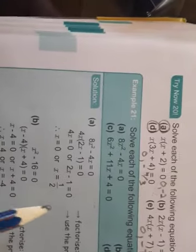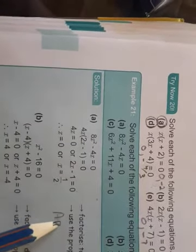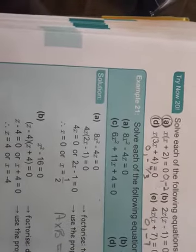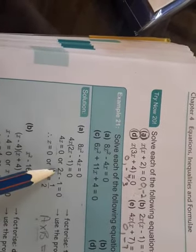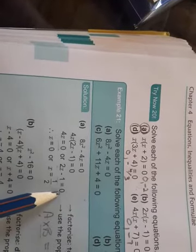So again, now the principle counts that if I multiply A times B and I must get 0, then either A must be 0. So 4x equals 0, or B must be 0, meaning 2x minus 1 equals 0.